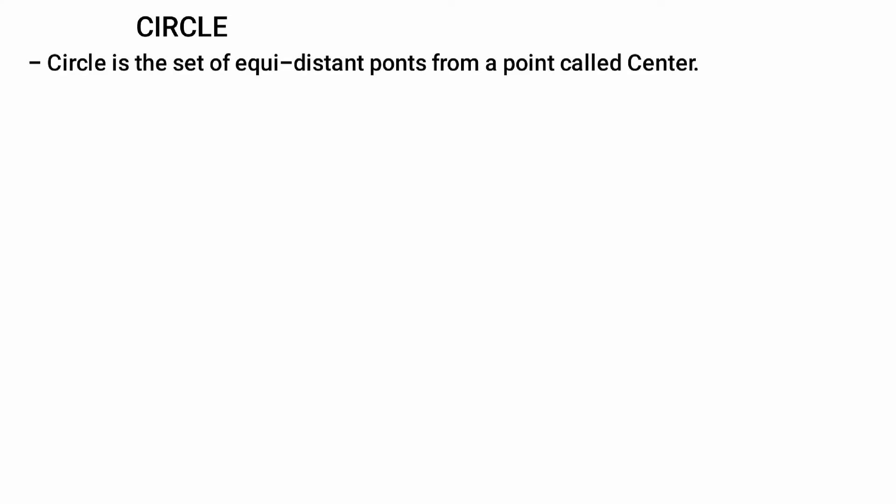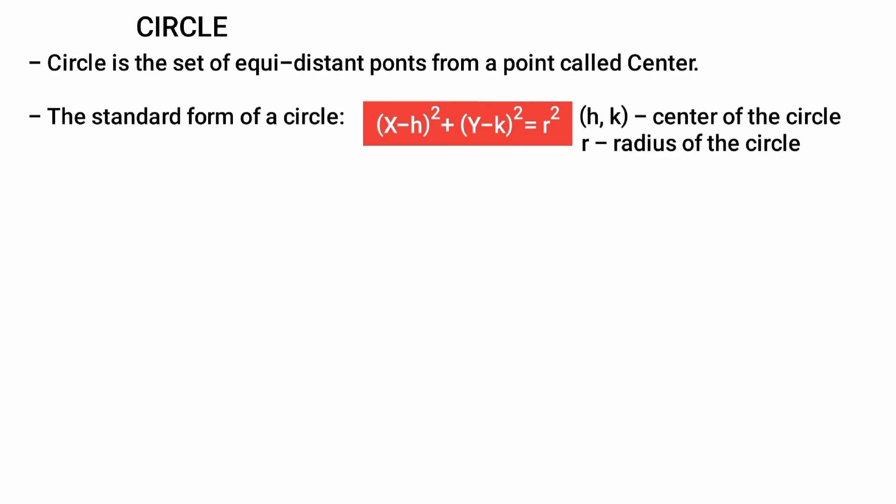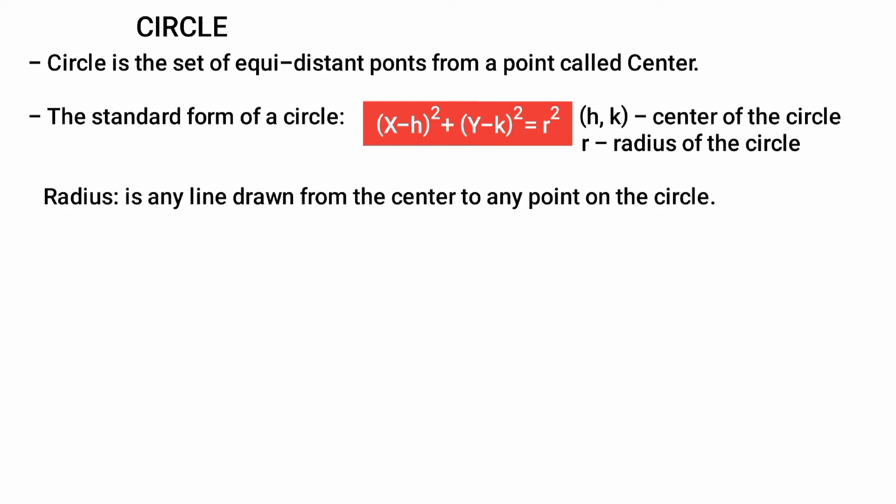Now let's discuss the circle. The circle is a set of equidistant points from a point called the center. The standard form of a circle is: (X minus H) squared plus (Y minus K) squared is equal to R squared. H and K are the coordinates of the center of the circle, and R is the radius — any line drawn from the center to a point on the circle.